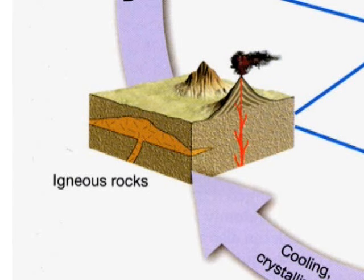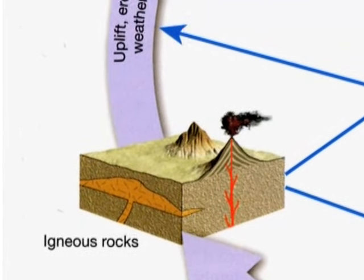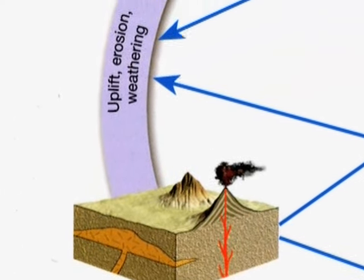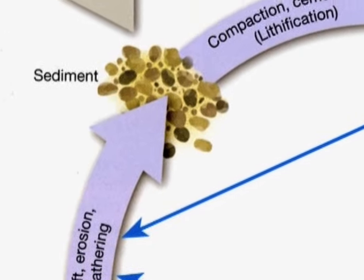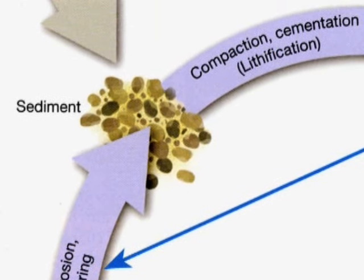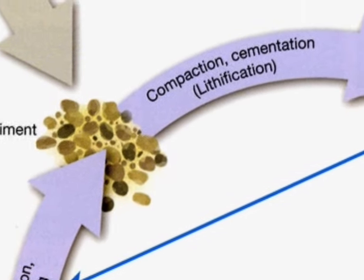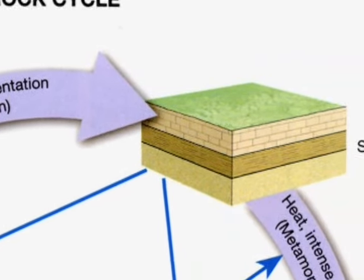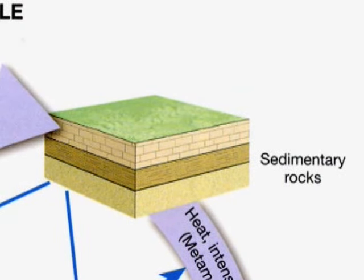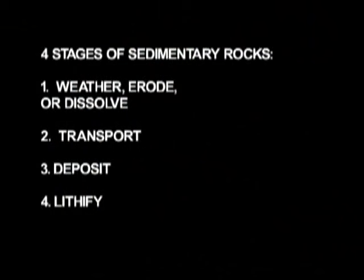Sedimentary rocks have to go through a bunch of processes. You have to start with a pre-existing rock, then weather it and erode it, transport it into some other type of particle or dissolve it into a liquid. You deposit it and then you lithify it into a rock. So it has four distinct stages that you have to go through to make a sedimentary rock.